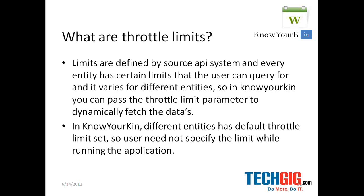Every entity has certain limits that the user can query for, and it varies for different entities. When you know, you can pass the throttle limit parameter to dynamically fetch the data. Every source API system has a throttle limit — it constrains you to pull the data sequentially.